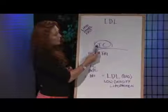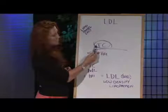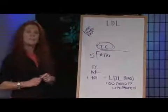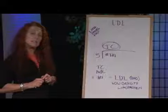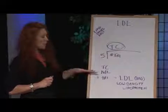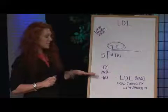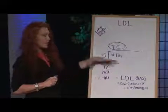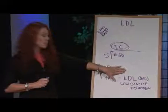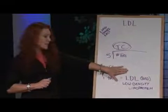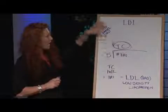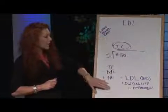Once they have calculated the total cholesterol, they then actually subtract the high density lipoprotein number. Once they've subtracted that, they add the triglyceride number back in — and there it is, your low density lipoprotein number. This is exactly how it is calculated.